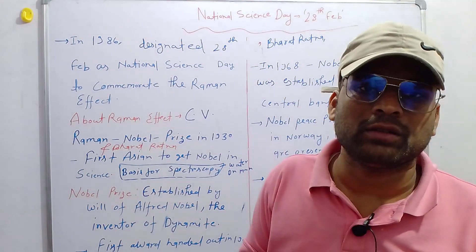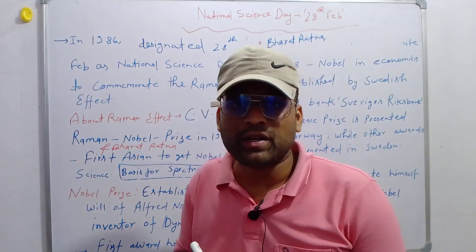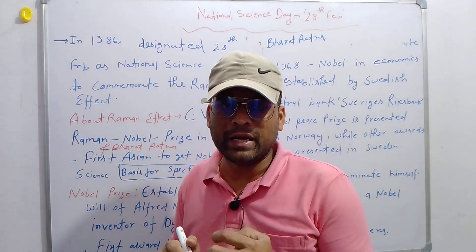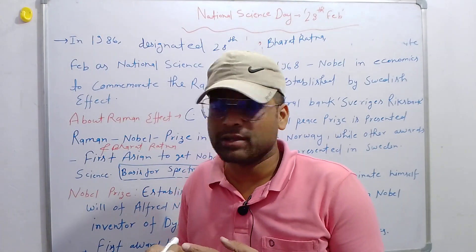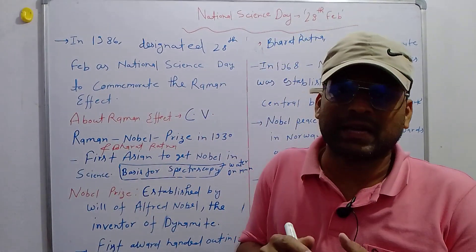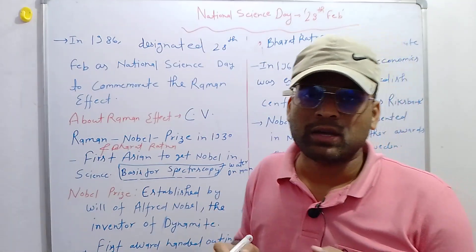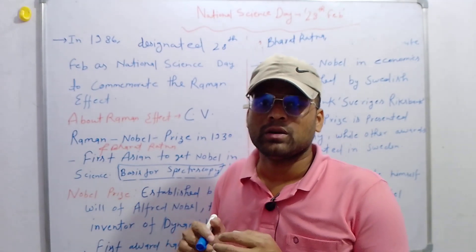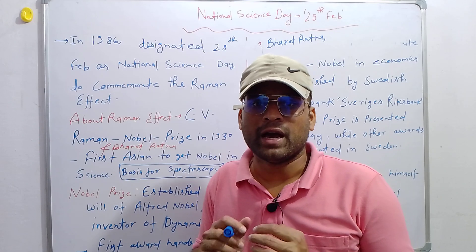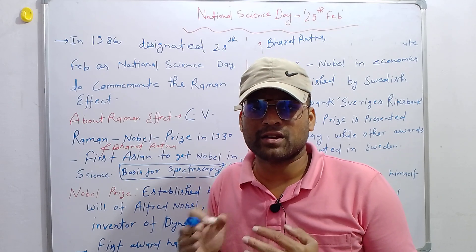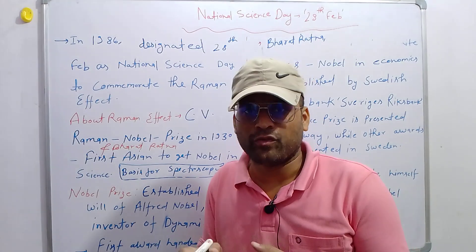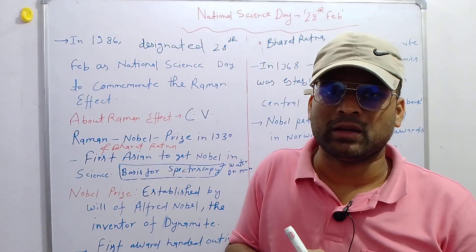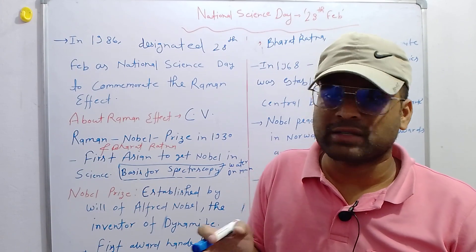Now we are going to learn what is Raman effect. Raman effect talks about scattering of light by the molecules. Two important points for the examination: first, the blue color of the sky happens due to the scattering of light; second, the red color during sunset and sunrise is caused by scattering of light.